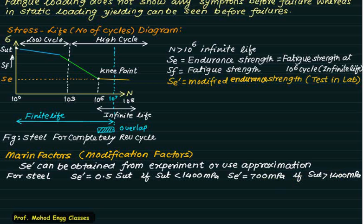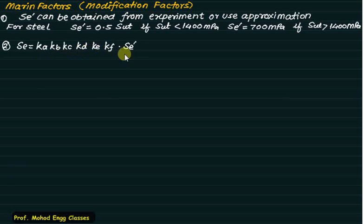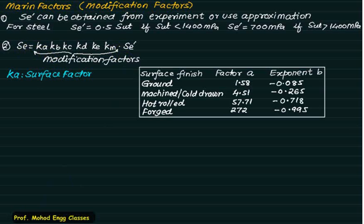The Marin equation is: SE = KA × KB × KC × KD × KE × KF × SE'. All these factors are modification factors and SE' is the laboratory value. KA is the surface factor, which depends on the type of surface finish used — whether ground, machined, cold drawn, hot rolled, or forged — and is given by KA = A × SUT^B.